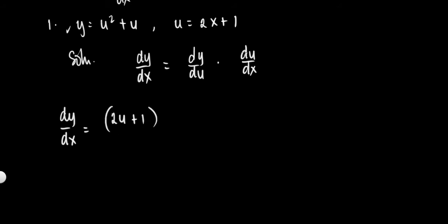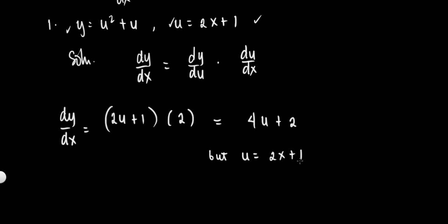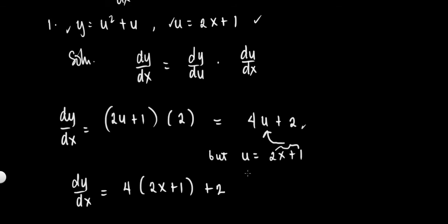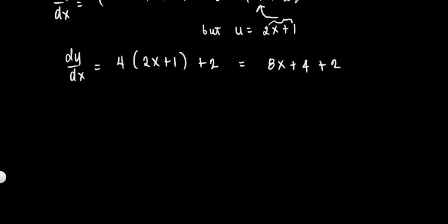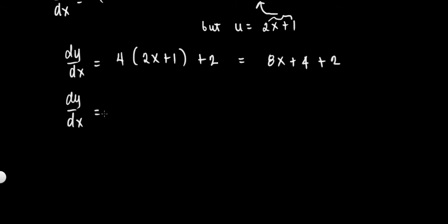Then multiply it by the derivative of u with respect to x. What is the derivative of 2x plus 1? Derivative of 2x plus 1 is 2. So we have 4u plus 2. But u is equal to 2x plus 1, so let's plug it in. So dy over dx is equal to 4 times (2x plus 1) plus 2, which equals 8x plus 4 plus 2. Or dy over dx is equal to 8x plus 6. This is your answer.